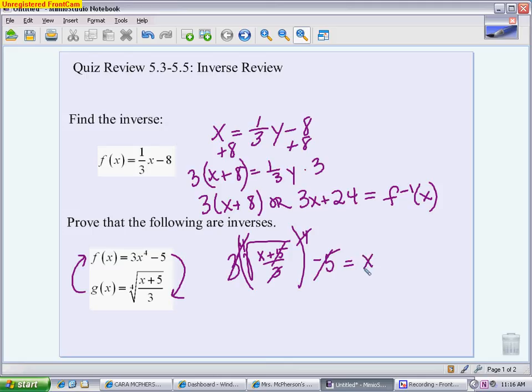Going the other direction, we're going to have the fourth root of (3x to the fourth minus 5 plus 5) all over 3. Same thing. Things are going to cancel in a slightly different order this time. The negative 5 and the positive 5 will cancel. The 3 divided by 3 will cancel. And then finally, the fourth root of x to the fourth leaves you with just x. That is how you prove that there are inverses.